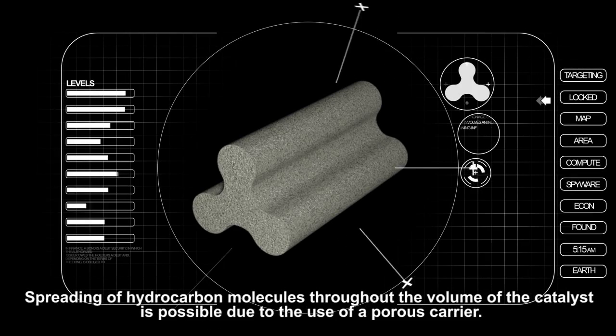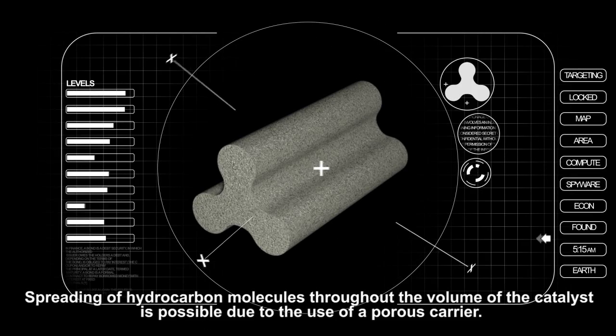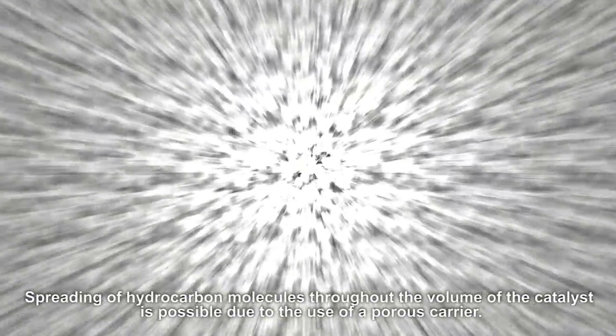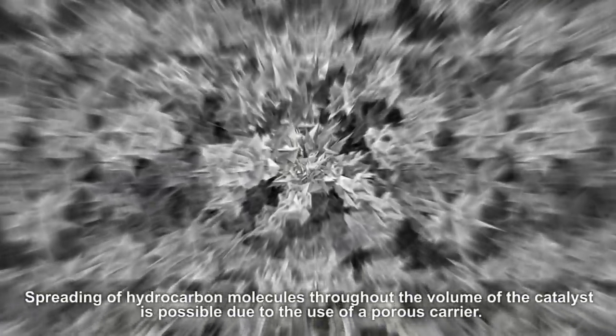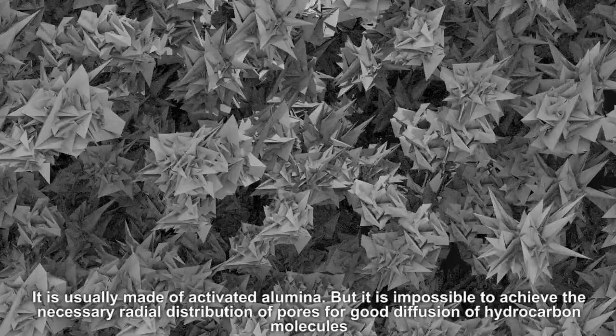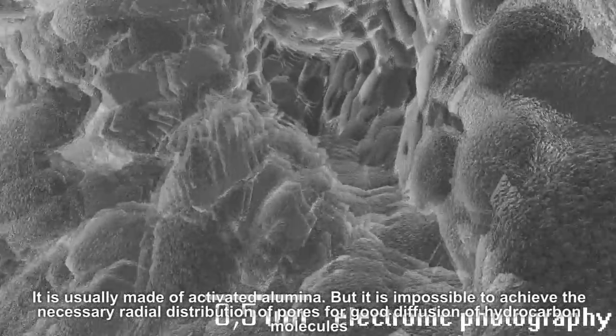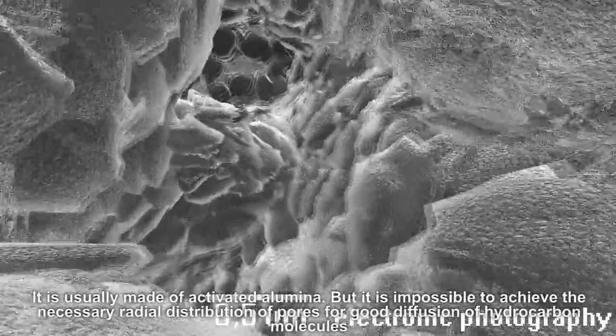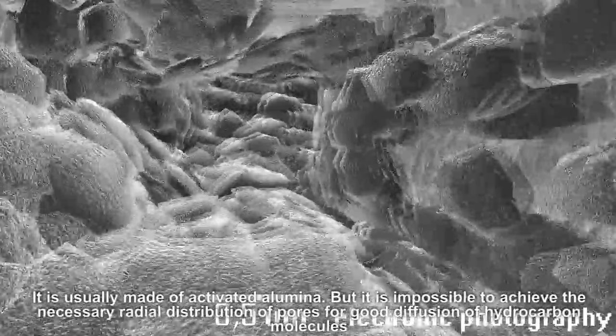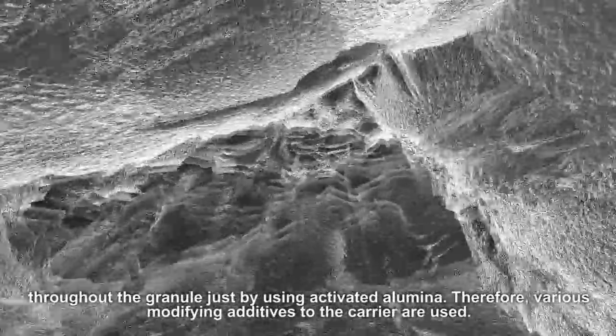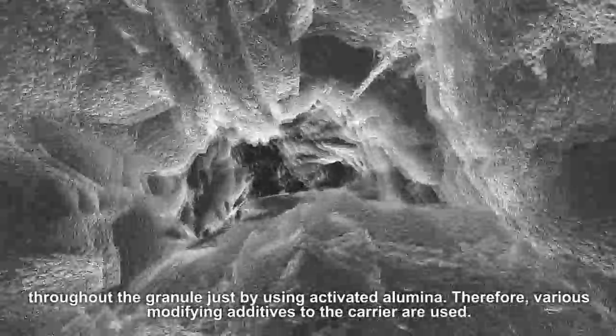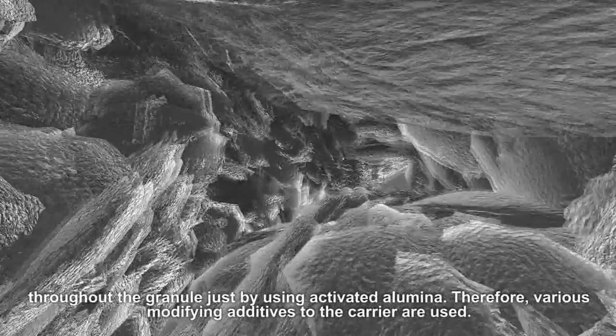The spreading of hydrocarbon molecules throughout the volume of the catalyst is possible due to the use of a porous carrier. It is usually made of activated alumina. But it is impossible to achieve the necessary radial distribution of pores for good diffusion just by using activated alumina. Therefore, various modifying additives to the carrier are used.